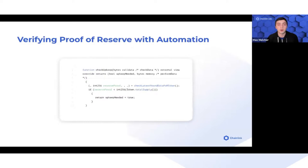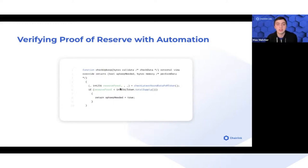Using Chainlink Automation, you can actually check this against the proof of reserve feed. As Sam explained, the check upkeep function runs every block, and what you can do is verify that the token supply is essentially less than the proof of reserve feed.